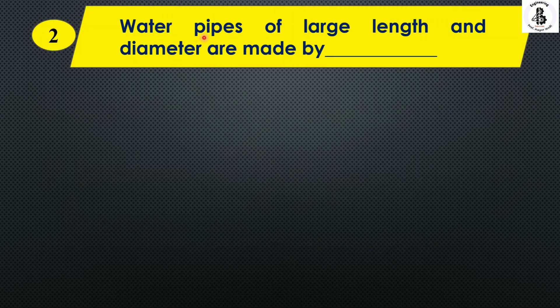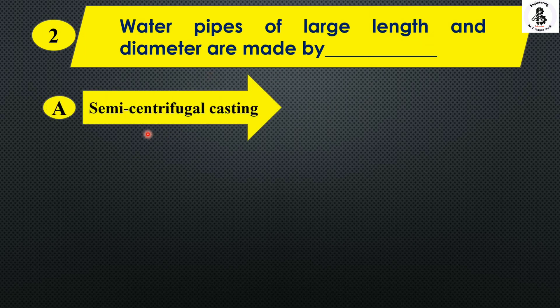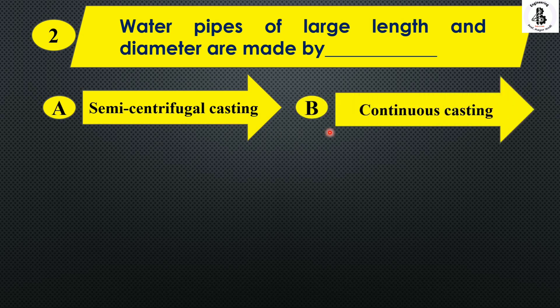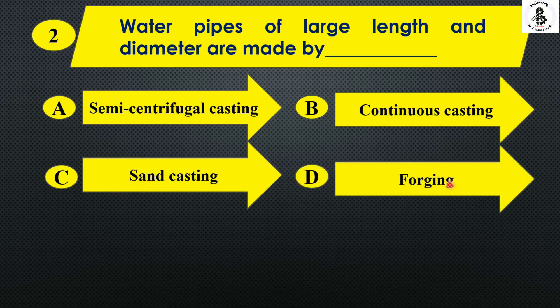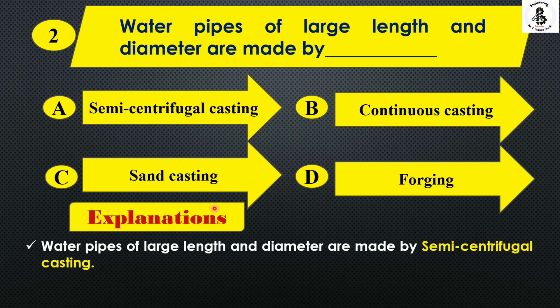Next: water pipes of large length and diameter are made by option A semi-centrifugal casting, option C sand casting, and option D forging. Basically, water pipes of large length and diameter are made by the semi-centrifugal casting process. So the right answer is option A.